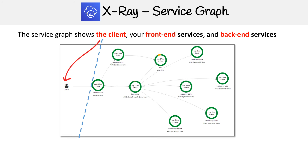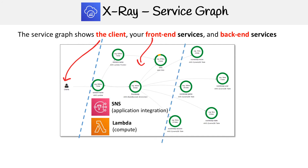Then we still have a bunch of other services that are running. We have your front-end services, and what we see running here is computing and application integration — so that could be SNS, Lambdas, ECS, EC2, SQS, anything like that.